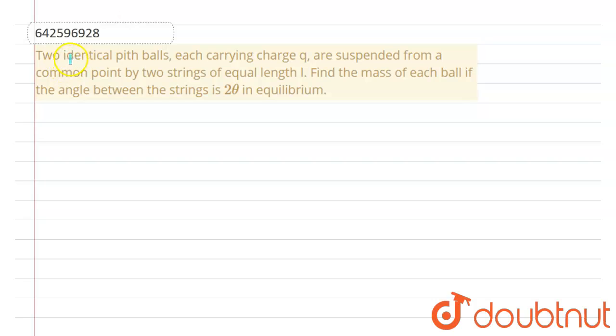In this problem we have given two identical pith balls, each carrying charge q, are suspended from a common point by two strings of equal length l. Find the mass of each ball if the angle between the strings is 2θ in equilibrium.